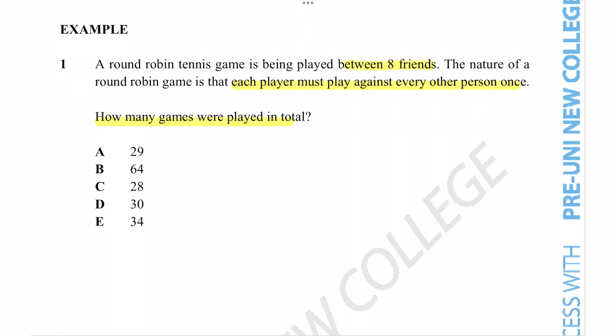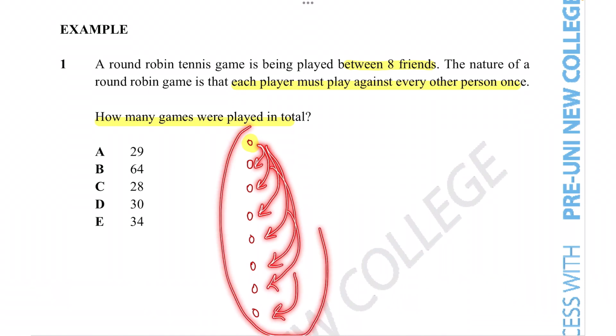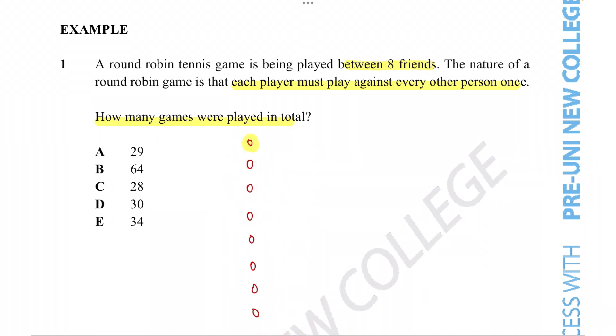We've got eight friends here: one, two, three, four, five, six, seven, eight. Every player has to play against another person. Say for example this guy, we're going to focus on this guy. This person needs to play against all of these people. Since there are eight friends and we're focusing on this person, that means there's seven friends left that this person needs to play with. So person number one plays seven times.